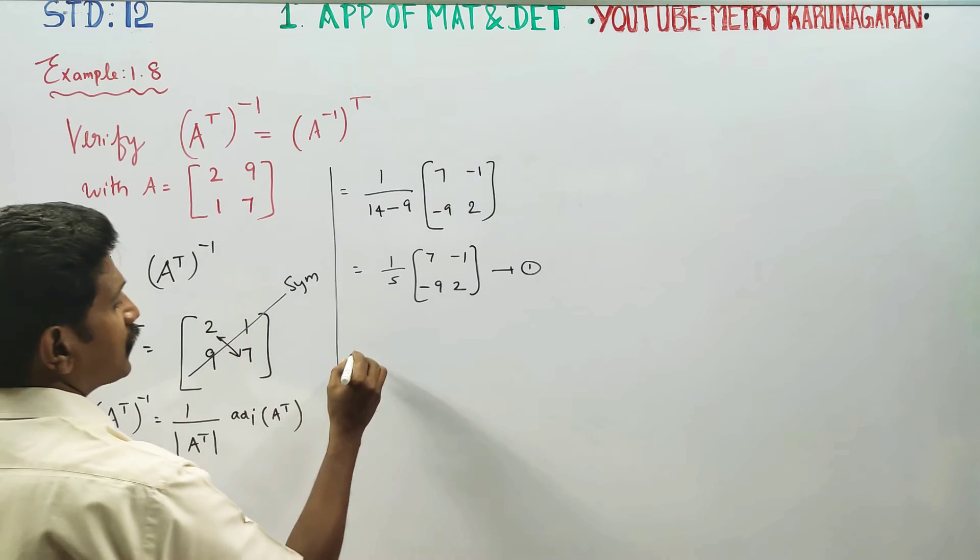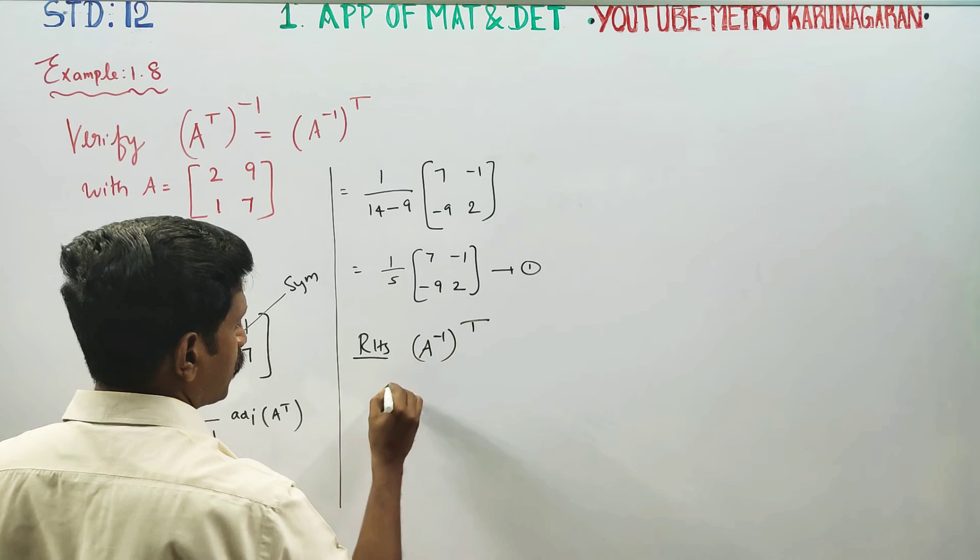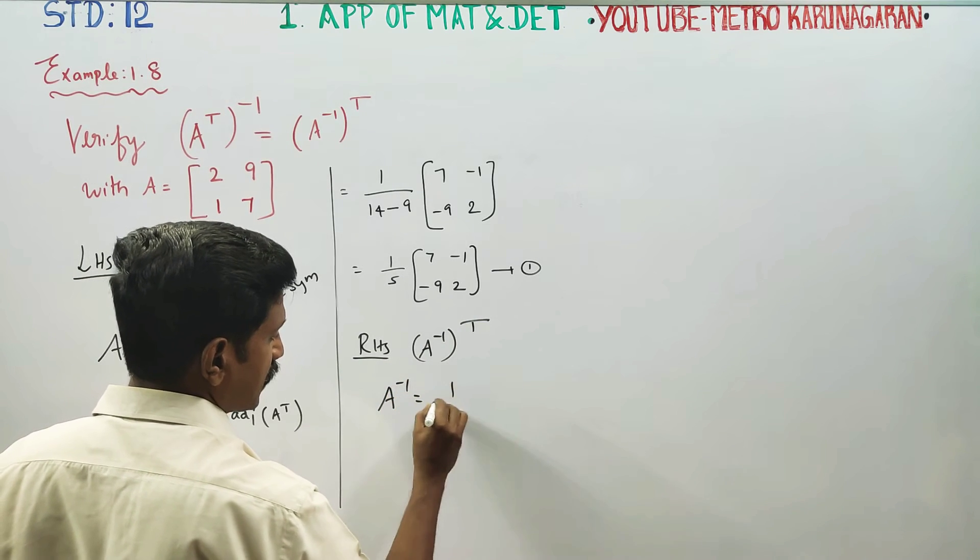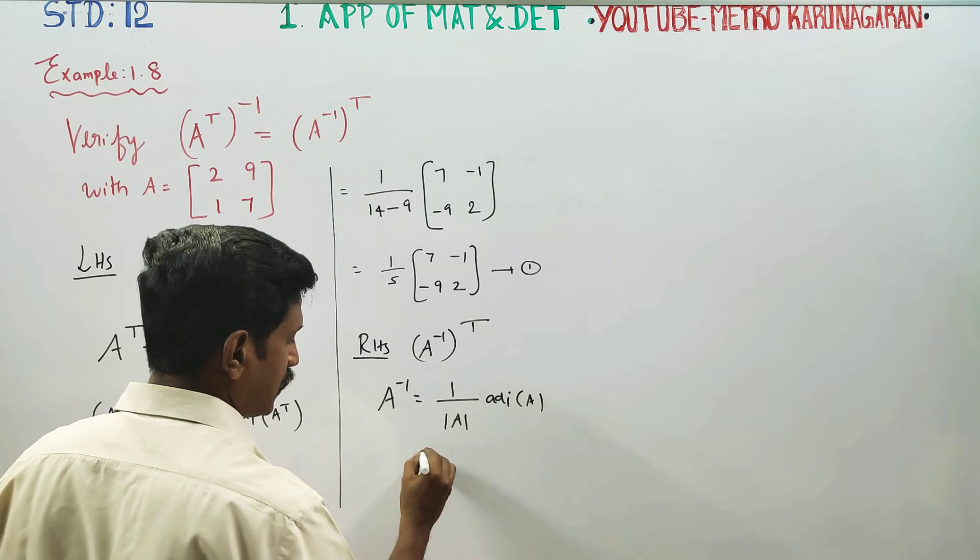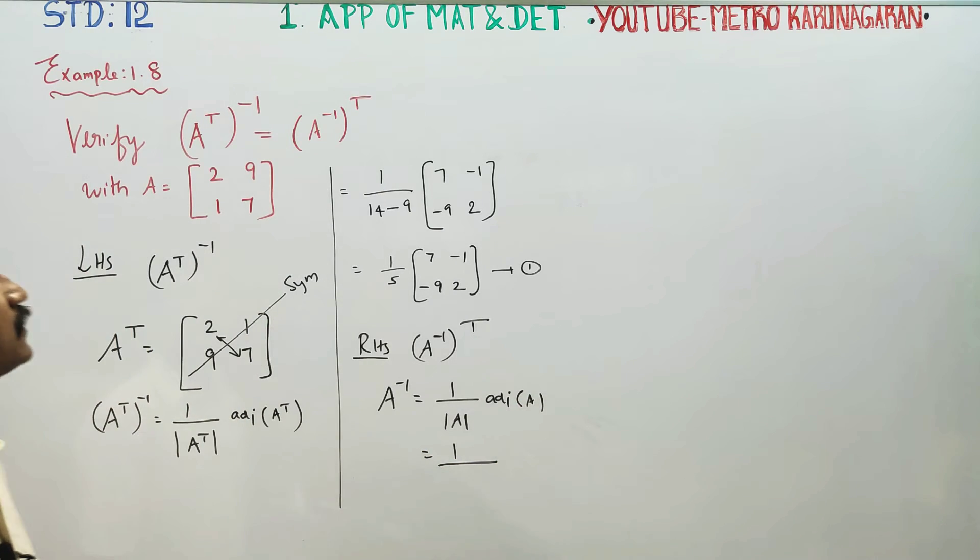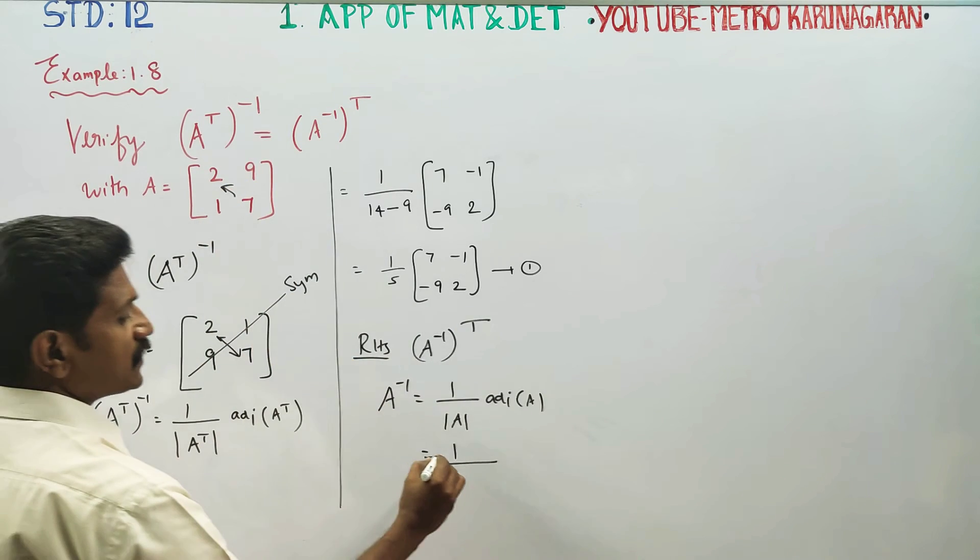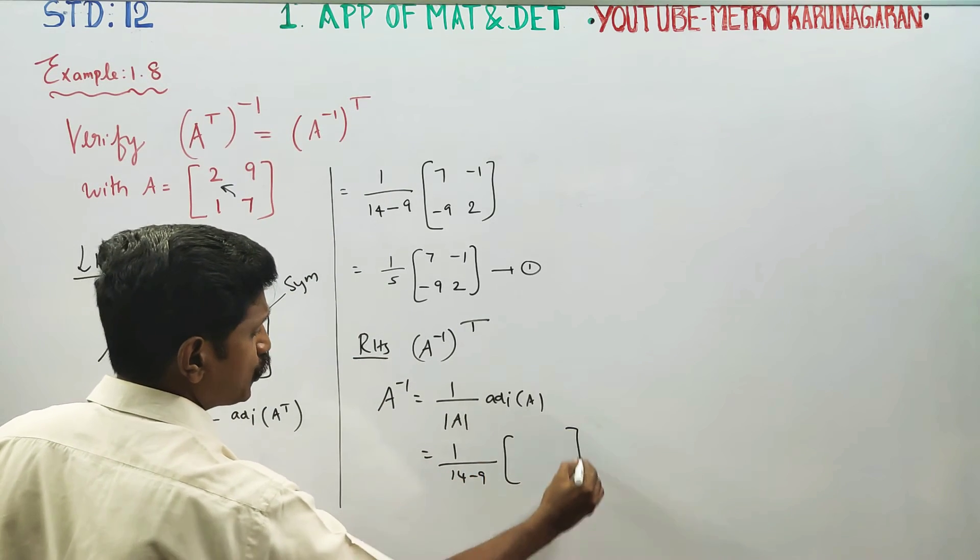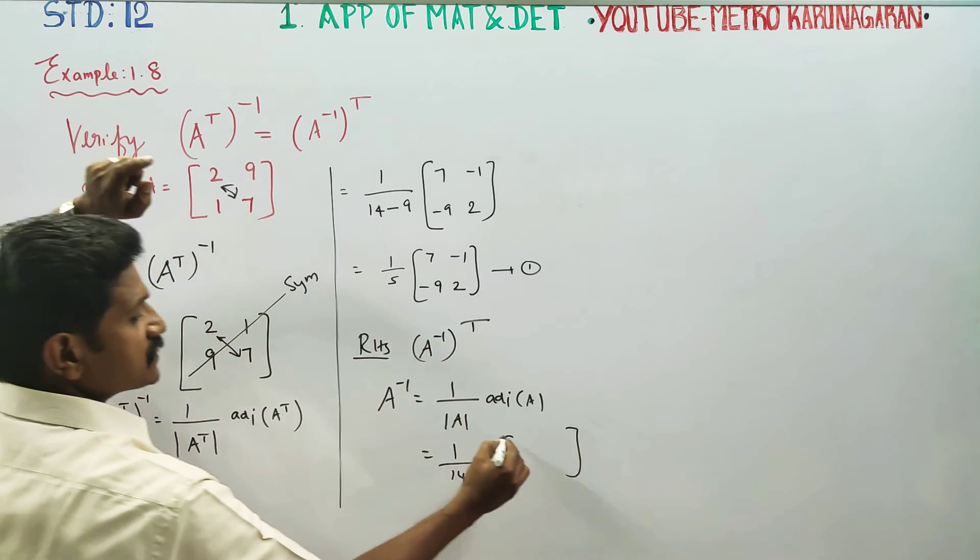Now for the RHS, which is A inverse whole transpose. I will start with my A inverse. A inverse would have formula, 1 by determinant A into adjoint A. Determinant A is now, right hand side minus left hand side, 7 to 14 minus 9, into adjoint A. Adjoint A is now, this interchange is now, 7 is now, 2K is now,